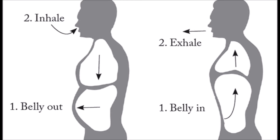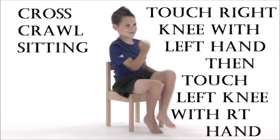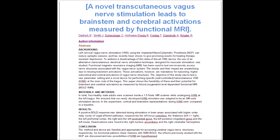Belly breathing — as you breathe in, the belly comes out. Use the diaphragm: diaphragmatic belly breathing, very important. Here are some acupressure points: under the nose and between the eyes. These spots can help to balance. Cross crawl techniques — touch the right knee with the left hand, left knee with the right hand — also help to stabilize the brain. There is a host of research about this, and research showing that our machine, with a little stimulation, can balance the vasovagal response.